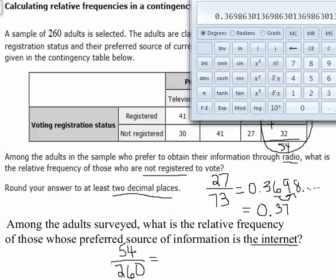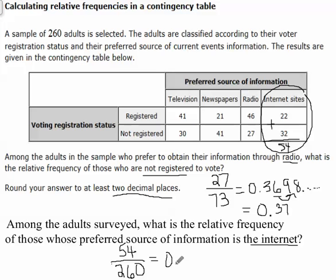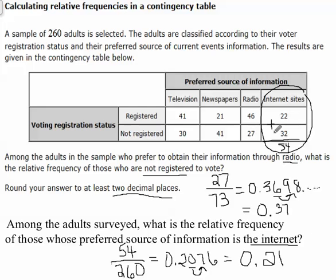I'm going to get my calculator out and do 54 divided by 260, and that gives me 0.2076. Again, we want to round to at least two decimals. Two numbers after the decimal — I look to the third, it's a seven, so I round this up to 0.21. That means 21% of the people surveyed prefer the internet as their source.